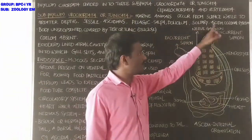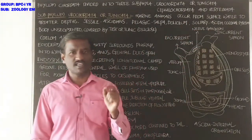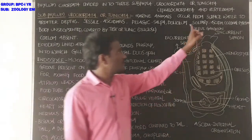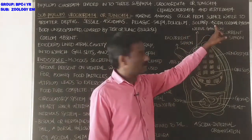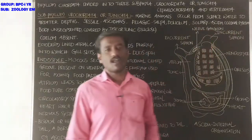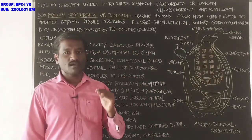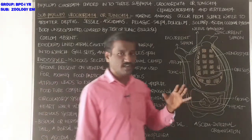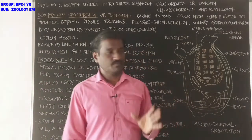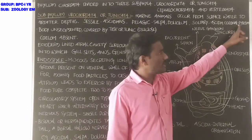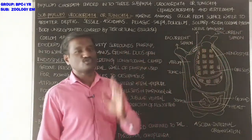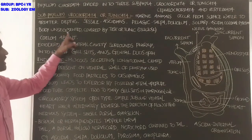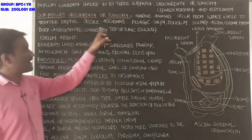Solitary means living alone — Ascidian is the solitary example. Colonial means forming a colony — individuals form a colony. Pyrosoma is the colonial example.